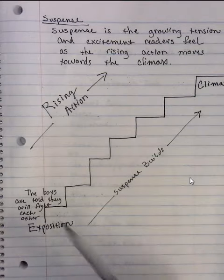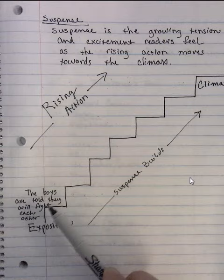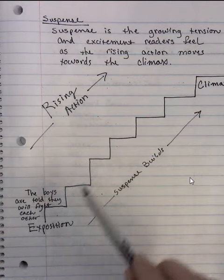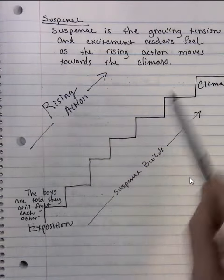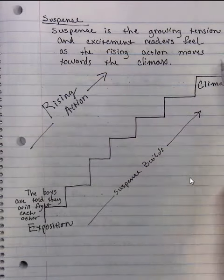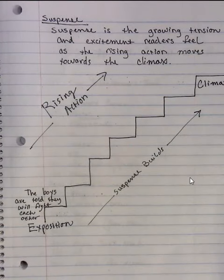What you're going to do is label each one of these steps as something that happens in the story that ultimately leads to the climax of the story, which is the turning point of the story.